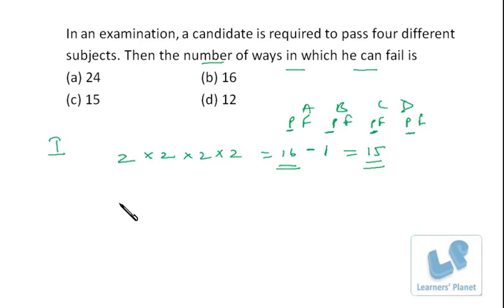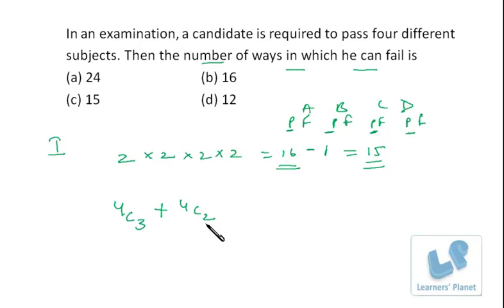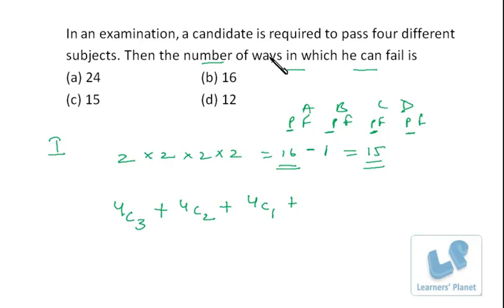In the second method, suppose he fails in three subjects out of four — that's 4C3 combinations. Or he fails in two subjects — that's 4C2. Or he fails in one subject — that's 4C1, meaning the failed subject is either A, B, C, or D, giving four combinations. We won't count the case where he doesn't fail at all, since we need the number of ways he fails.